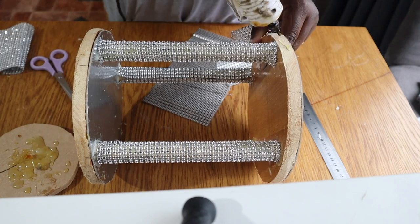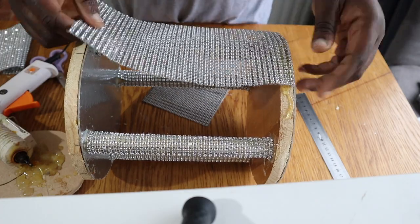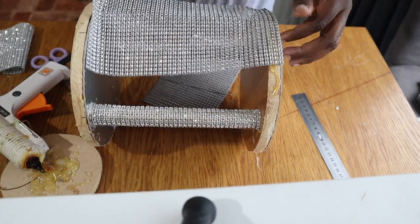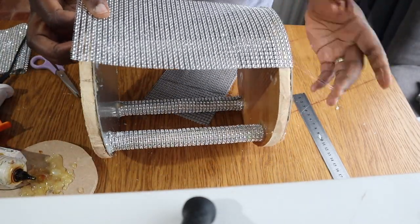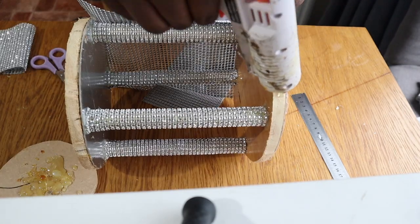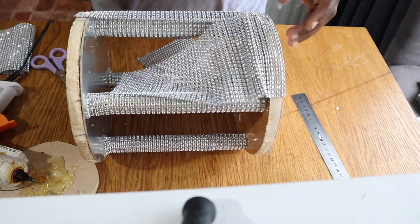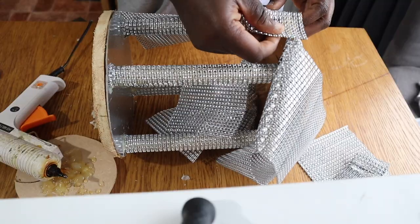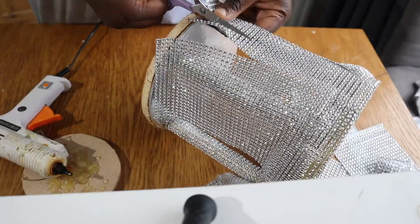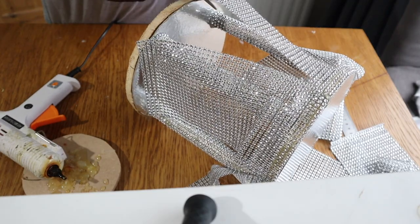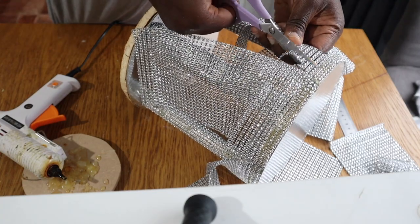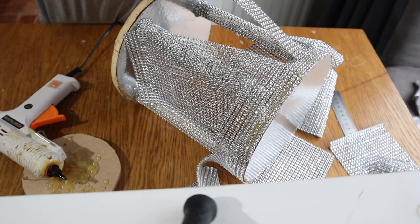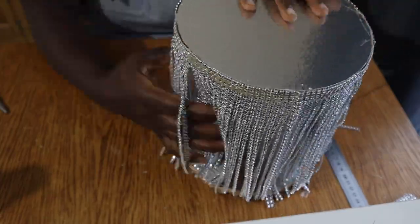Next, I cut sheets of bling ribbon the same height as the gazebo and then using my hot glue I glued them all around it. As you can see, I'm gluing these bling ribbon sheets just at the top of the gazebo. Next, using the scissors I cut the bling ribbon into single strips up to the edge like so. After cutting the bling ribbons this is what it looked like.